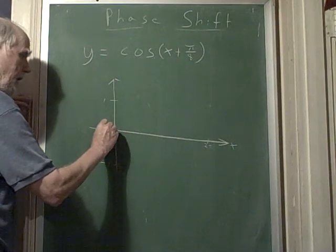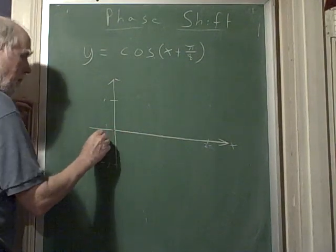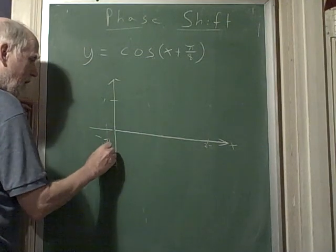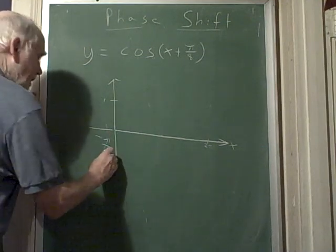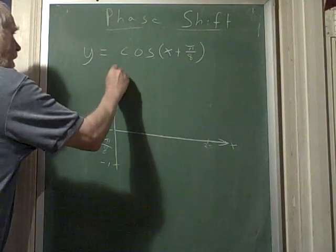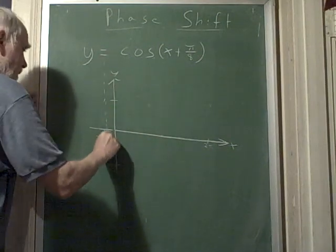It's just a little bit like this. It's about right here. There's minus pi over 8.